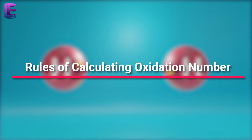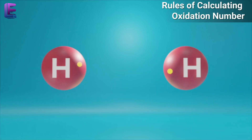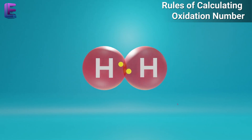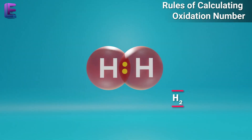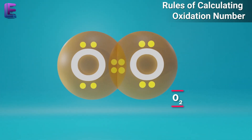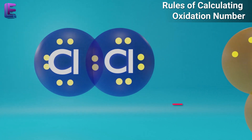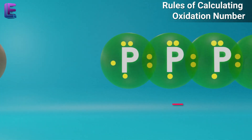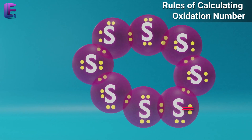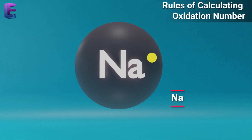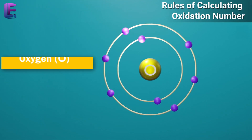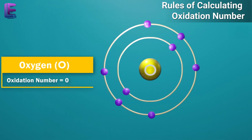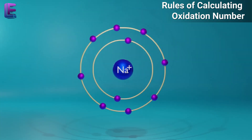Rules of Calculating Oxidation Number. In elements in the free or uncombined state, each atom bears an oxidation number of zero. For example, each atom in H2, O2, Cl2, O3, P4, S8, Na, Mg, and Al has the oxidation number zero.